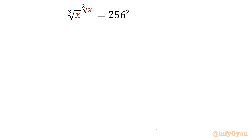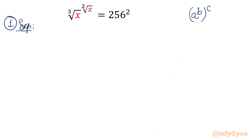Let me write Method 1: using exponents. I will begin by writing the property of exponent. It states that a raised to b, whole raised to c, can be written as a raised to c, whole raised to b, and at the same time a raised to b times c.